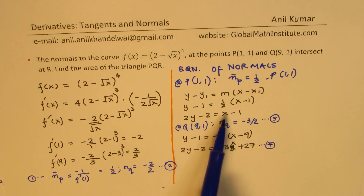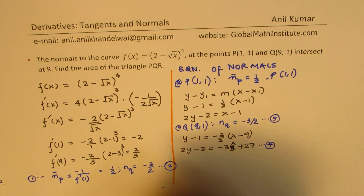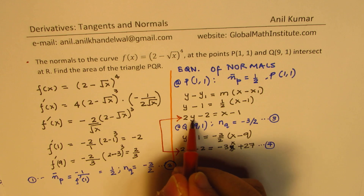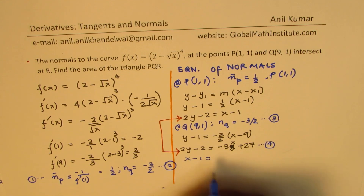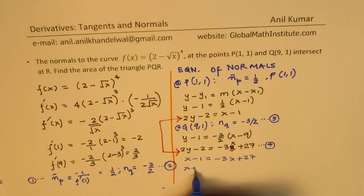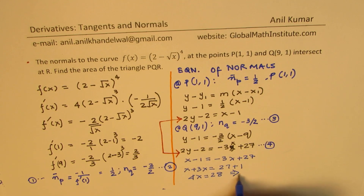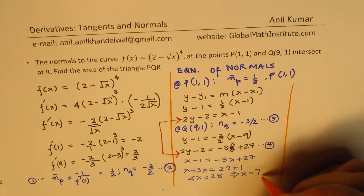From both equations we have the same left-hand side: 2y − 2. Equating the right-hand sides: x − 1 = −3x + 27. Rearranging: x + 3x = 27 + 1, so 4x = 28, giving x = 7.